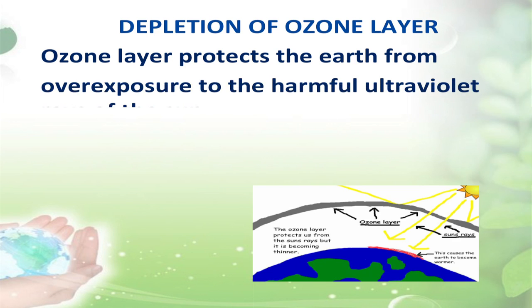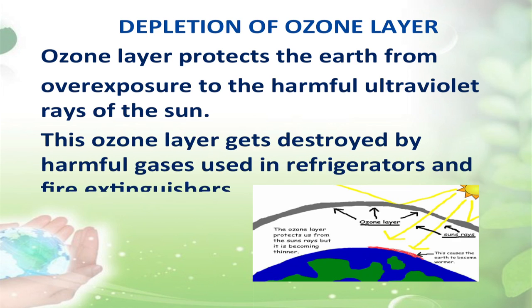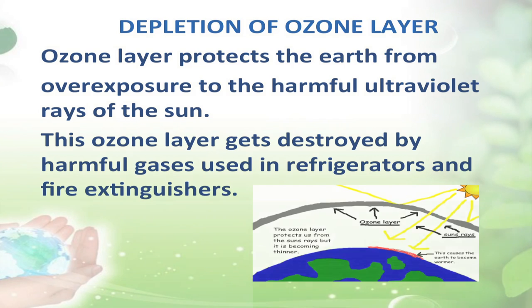Depletion of ozone layer: The ozone layer protects the earth from overexposure to the harmful ultraviolet rays of the sun. This ozone layer gets destroyed by harmful gases which are used in refrigerators and other fire extinguishers. Ultraviolet rays can cause skin cancer and eye problems like cataract and even permanent blindness.